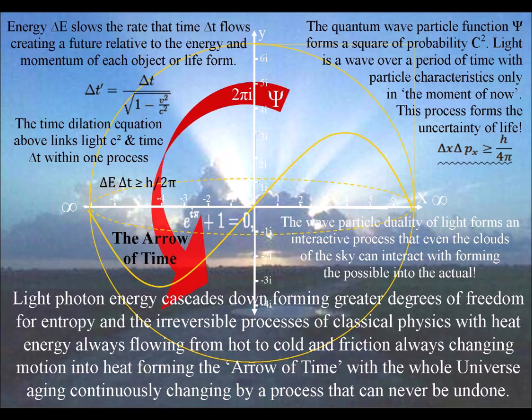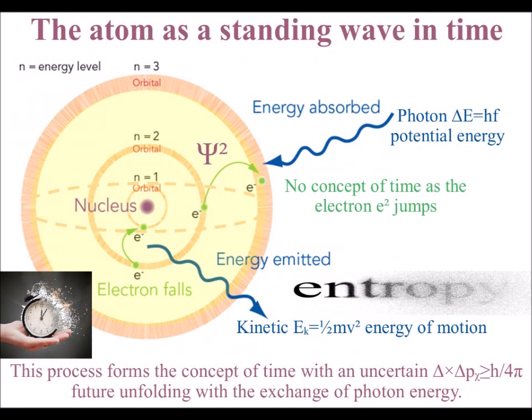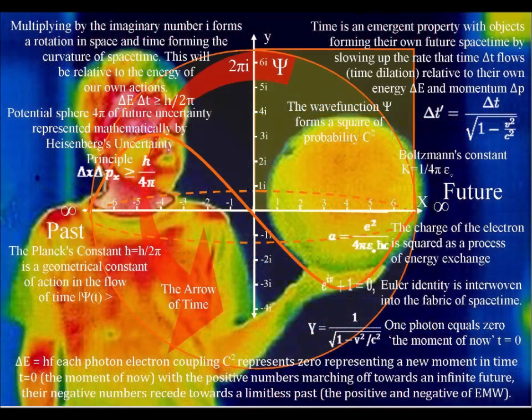We always have a probabilistic uncertain future coming into existence with the exchange of photon energy. The wave-particle duality of light and matter in the form of electrons is forming a blank canvas that we, as atoms, can interact with, forming a future relative to our actions.